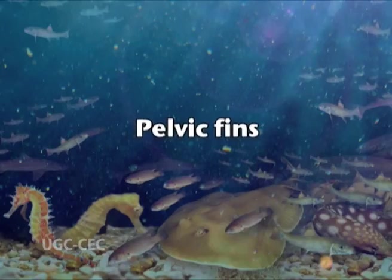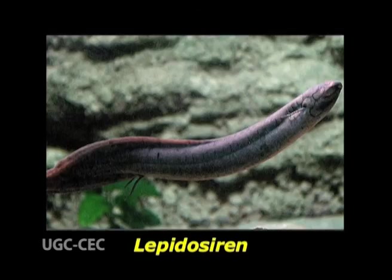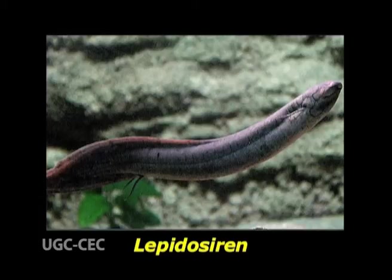Pelvic fins: in the American lungfish Lepidosiren, during breeding time, the pelvic fins of the male become enlarged and grow filamentous vascular outgrowths which provide fresh oxygen to the guarded eggs.